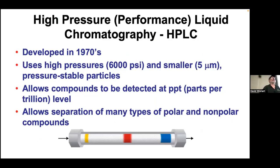The most common method for separating molecules in biochemistry, chemistry, and metabolomics is high-performance liquid chromatography (HPLC), developed about 50 years ago. It uses very high pressures — about 6,000 pounds per square inch — and very small pressure-stable particles of about 5 microns. This allows detection and separation of compounds at the parts-per-trillion level. Depending on the stationary phase, you can separate and detect both polar and nonpolar, hydrophilic or hydrophobic compounds.